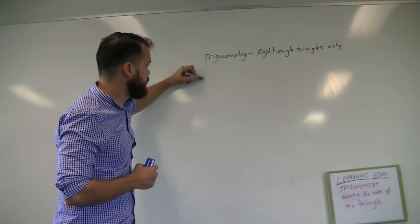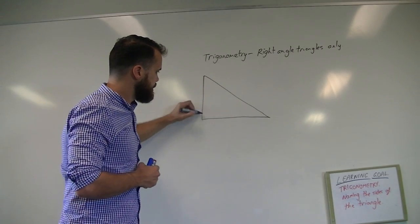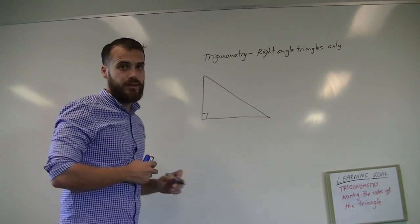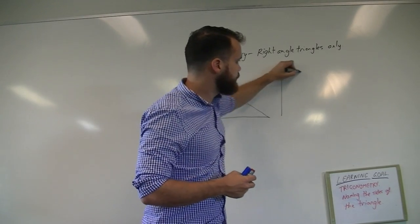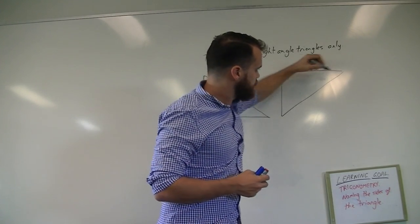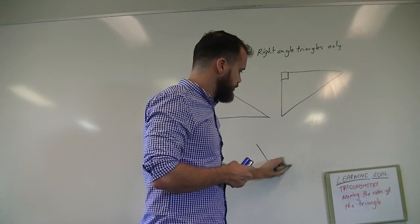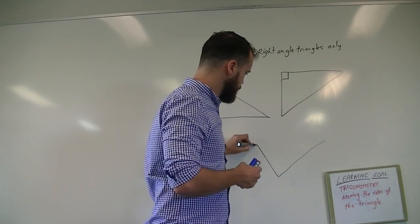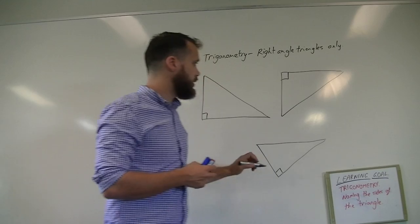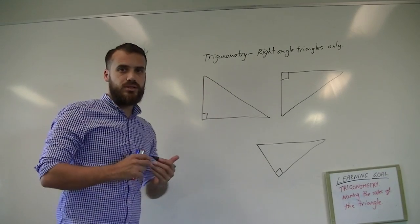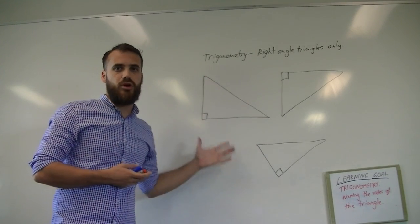Remember, a right angle triangle looks like this. It could also look like this, or something a bit different. So there are three examples of a right angle triangle.